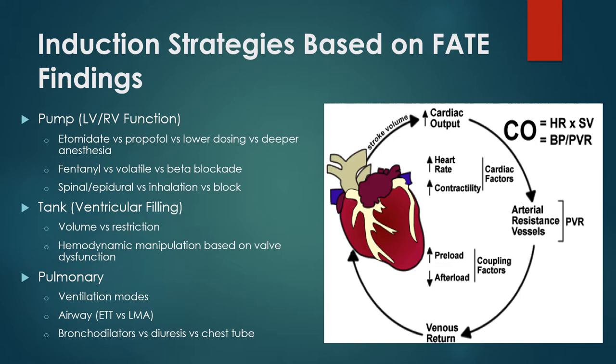These are things associated with both the FADE exam and the RUSH exam. For pulmonary assessment, you're looking at ventilation modes — maybe pressure control ventilation for a pleural effusion, maybe using IRFO, or maybe choosing an endotracheal tube because of effusion. You might consider bronchodilators versus diuresis versus chest tube. Those who previously used a stethoscope to modify their anesthetic plans, or looked at chest X-rays or BNP, can use this as just another tool.